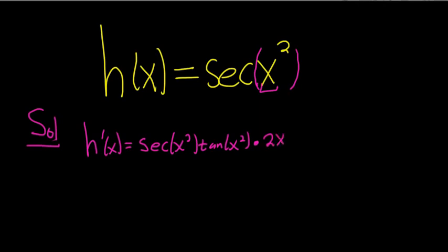Again, the chain rule says you take the derivative of the outside. The outside function is secant. Its derivative is simply secant tangent, and you don't touch the inside. So you write it all again, then you multiply by the derivative of the inside. The derivative of x² is 2x.